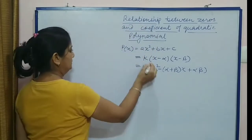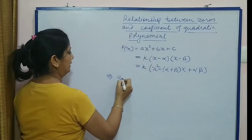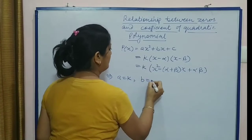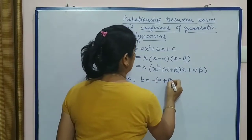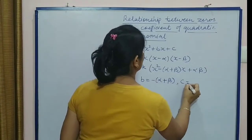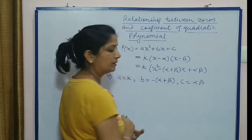Now compare. What is a? a is k. What is b? -(α + β). And what is c? c is αβ.